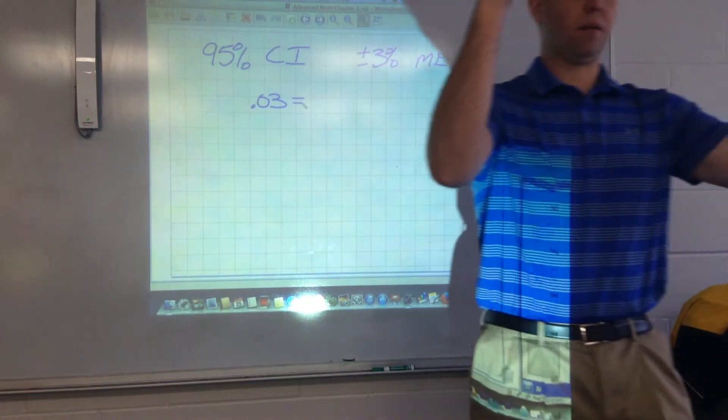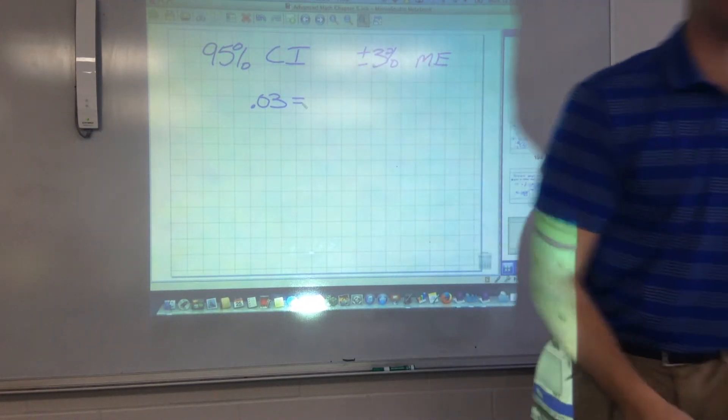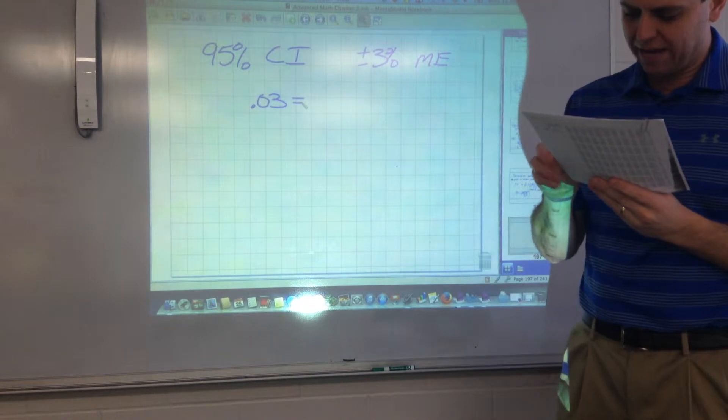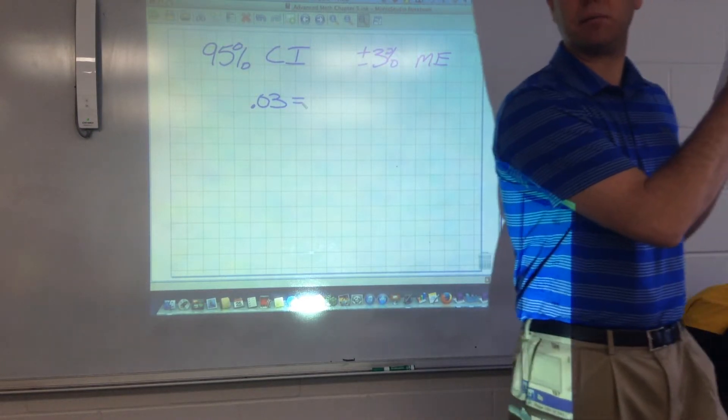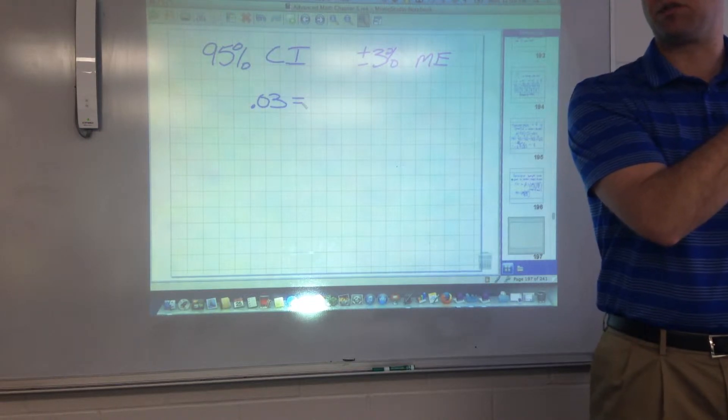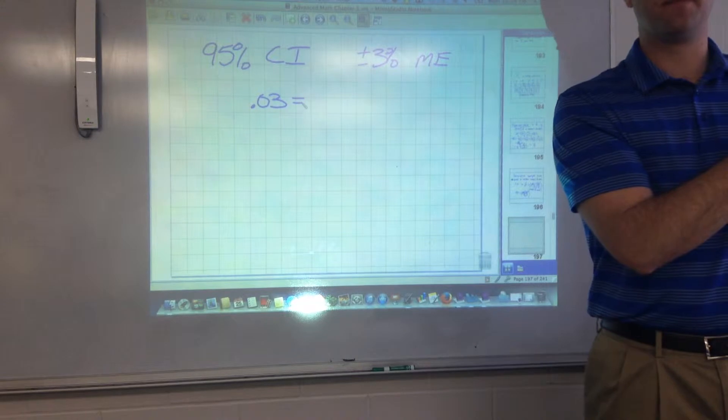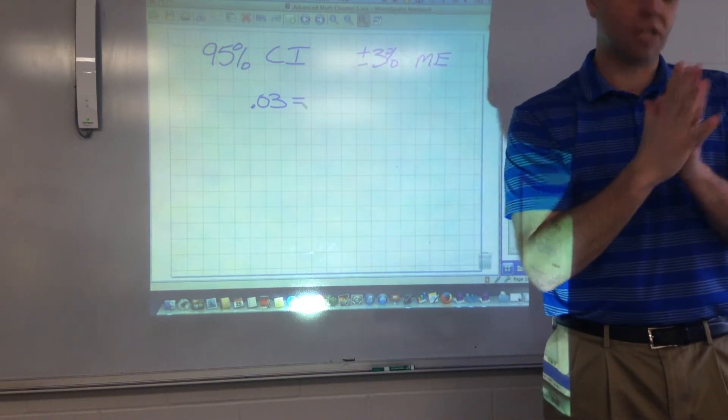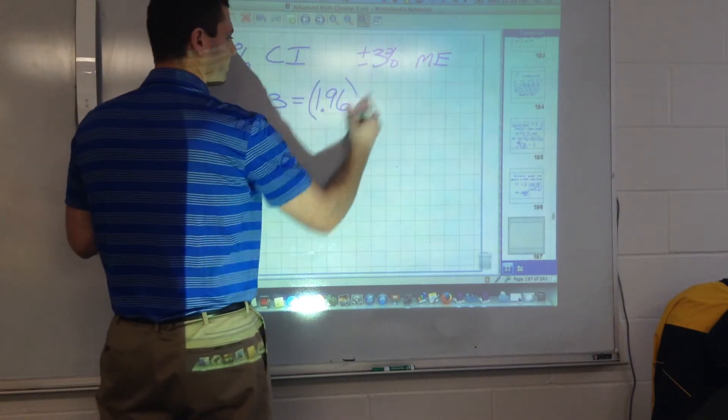So if you look on your, for a 95% confidence interval, 95% from here to here, that means there would be 5% here, or excuse me, 2.5% here and 2.5% here, right? So on my z chart, I'm going to look for, if there's 2.5% here, that would be 97.5 or 0.975. If I'm looking for 0.975, it is actually 1.96 on my z table. 1.96 standard deviations away. How about on your calculator, what's it give you? 1.9599. So really, really close to 1.96, right?